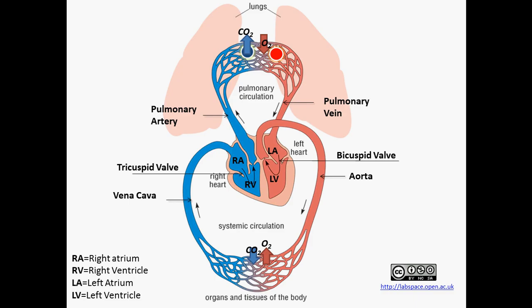Now the blood that is going to be leaving the lungs is going to be high in oxygen. This blood is now going to travel from the lungs via the pulmonary vein to the left atrium, through the bicuspid valve to the left ventricle, through the semilunar valve to the aorta.